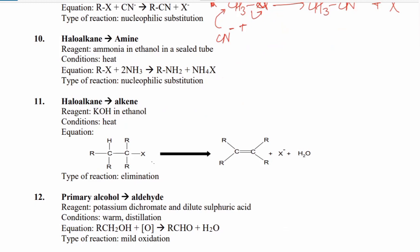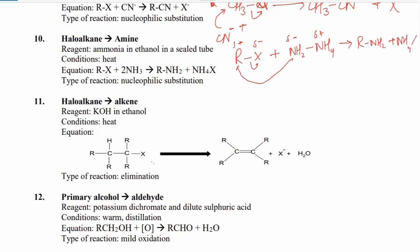The reagent ammonia in ethanol in a sealed tube with heat converts haloalkanes into amines. The alkyl halide (R–X) reacts with NH₃: nitrogen has a partial negative charge and the carbon has a partial positive charge, so NH₃ attacks, the halogen is released, and R bonds to NH₂ to become an amine, with NH₄⁺ also formed as a byproduct.